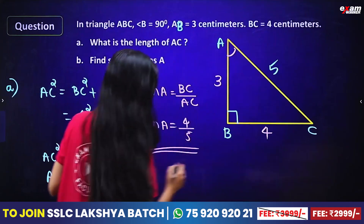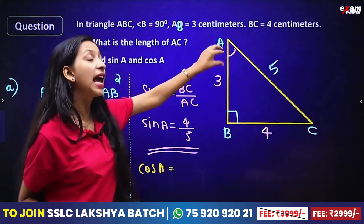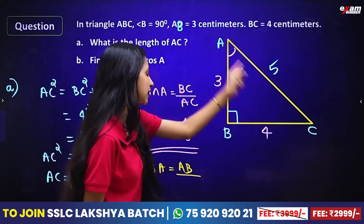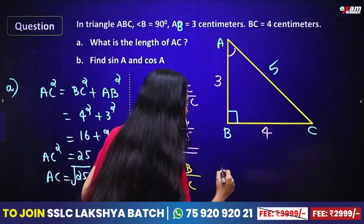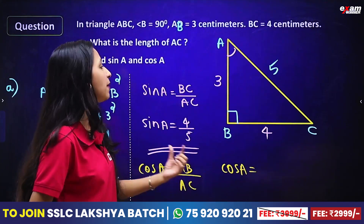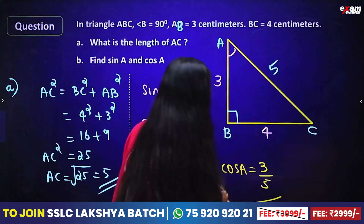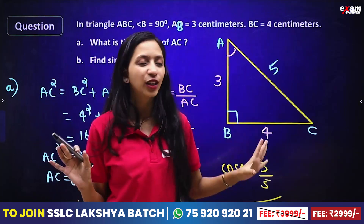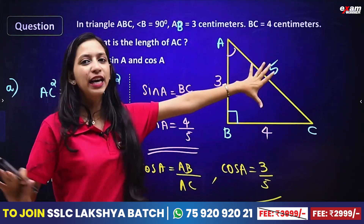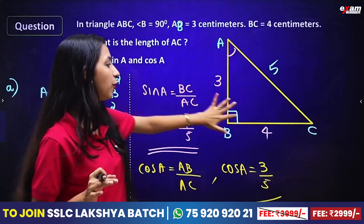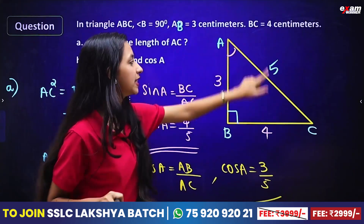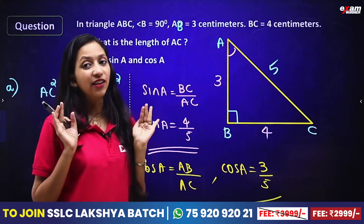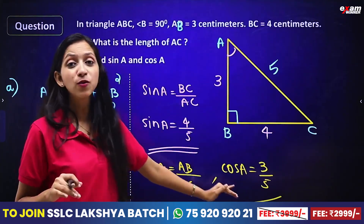Cos A is equal to the adjacent side divided by hypotenuse. The adjacent side is AB, which is 3. Cos A equals AB by AC, so cos A is equal to 3 by 5. Sin A equals 4 by 5 and cos A equals 3 by 5. This is very simple — we have the 3, 4, 5 triangle.